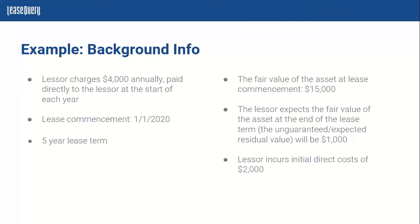For our example, here are the facts: the lessor is charging the lessee $1,000 annually, with payment made directly to the lessor at the beginning of each year. The lease starts on January 1, 2020, and is a five-year lease term. At lease commencement, the fair value of the asset being leased is $15,000. At the end of the lease term, the lessor estimates the unguaranteed residual value to be $1,000. Additionally, the lessor has incurred initial direct costs of $2,000, which we'll use for all standards in this example.